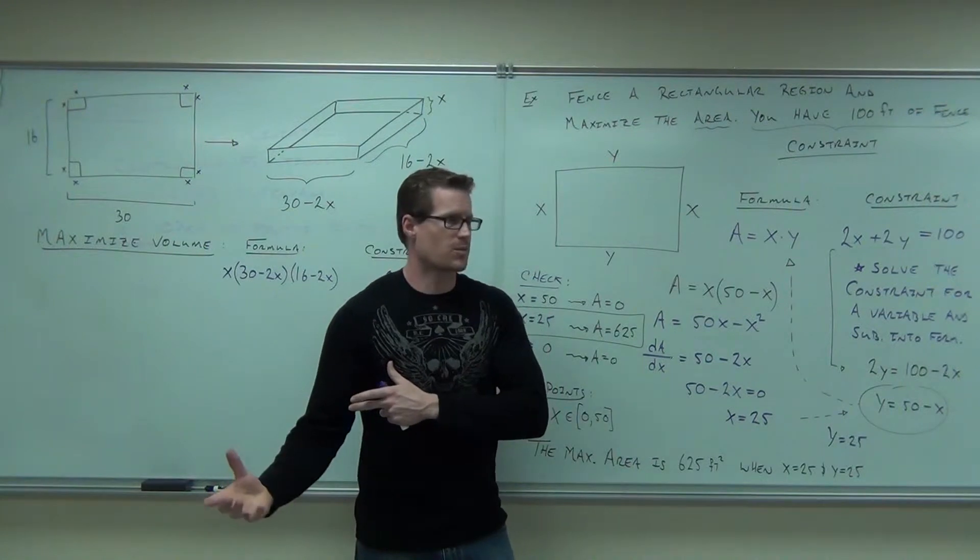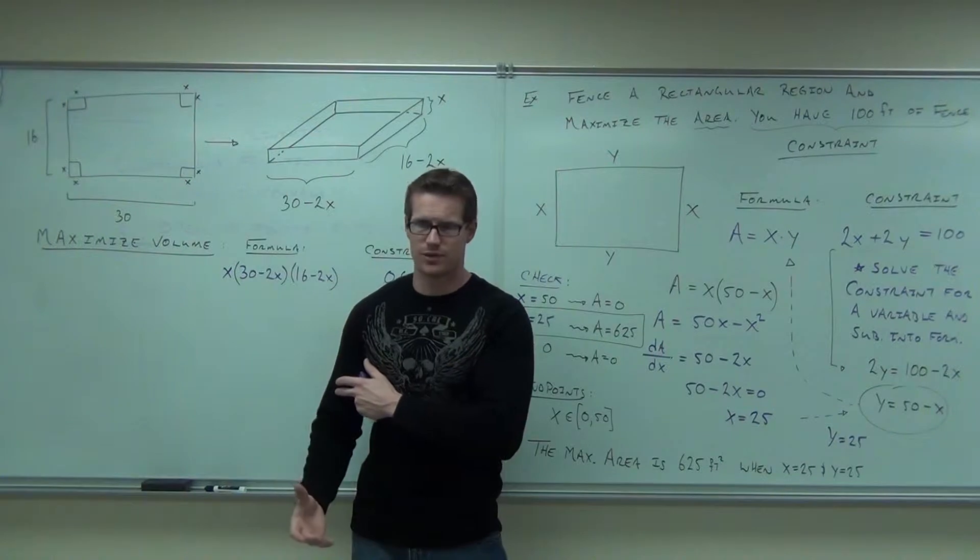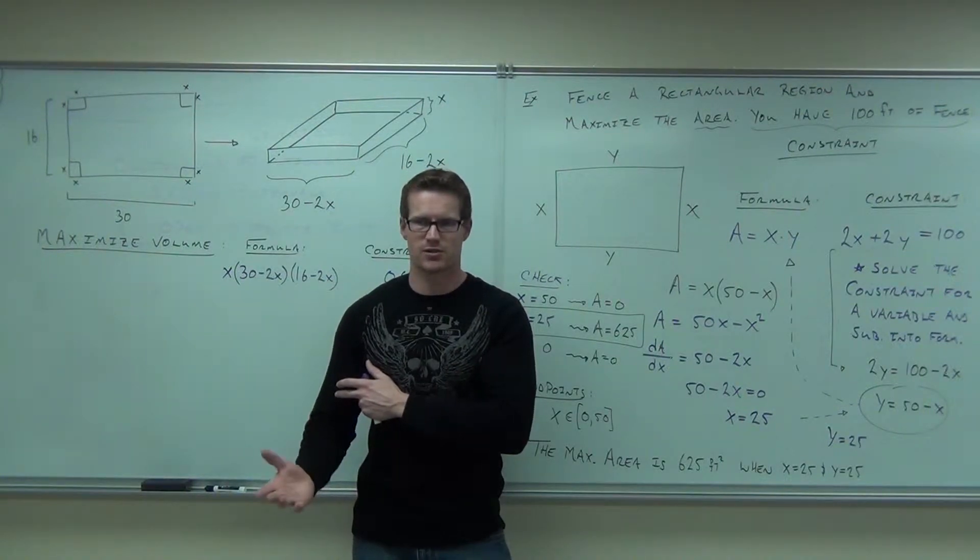But the places where it occurred are the places where the slope is going to be zero, right? How do you find the slope? Take a derivative. When all of this fails, take a derivative.